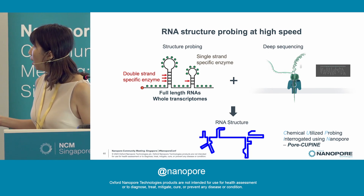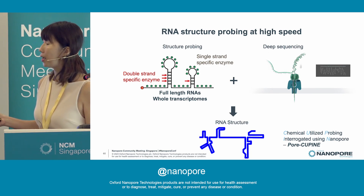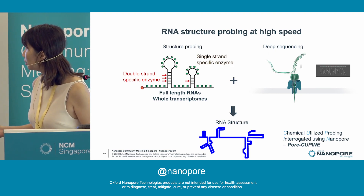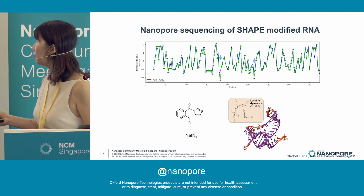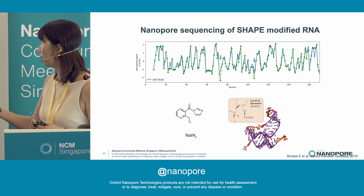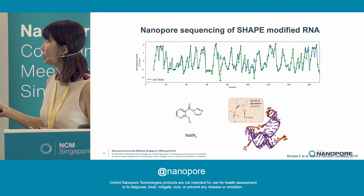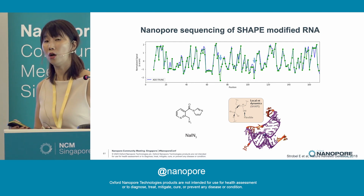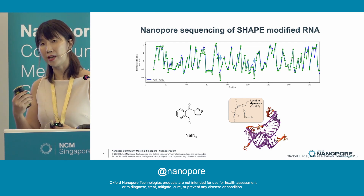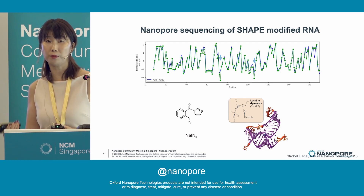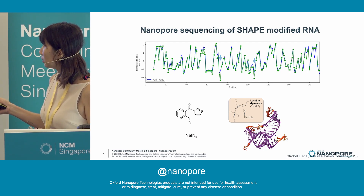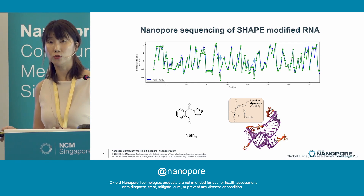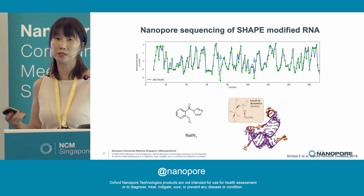So we started working on coupling biochemical chemical probing of RNA together with nanopore sequencing to read RNA structures. The premise is actually pretty simple: as the RNA goes through the pore, there's a signal. When you add a chemical that modifies all the single-stranded bases along the RNA — not a natural modification, but a chemical modification — you will have a signal shift.